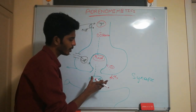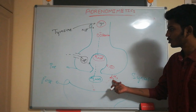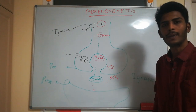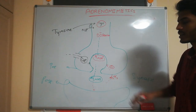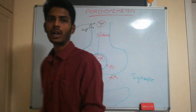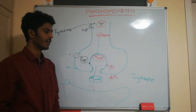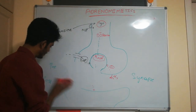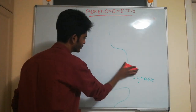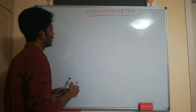Using alpha 2 stimulation, we can treat hypertension: stimulating alpha 2 receptors tells the neuron to stop releasing adrenaline and noradrenaline, thus decreased neurotransmission decreases blood pressure. Now let's talk about adrenomimetics, starting with catecholamines — adrenaline and noradrenaline.